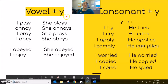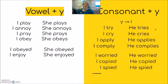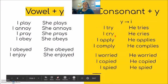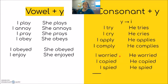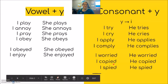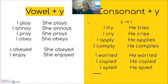A few more examples here. On the left side you see vowel plus Y. On the right side you see consonant plus Y. Play/plays — no change, that vowel A. Annoys — no change, that vowel O. Vowel E — no change. Consonant Y: try, cry, apply, comply. Worried, copied, spied — we see that Y changes to I when there is the consonant Y. So that's the verb.